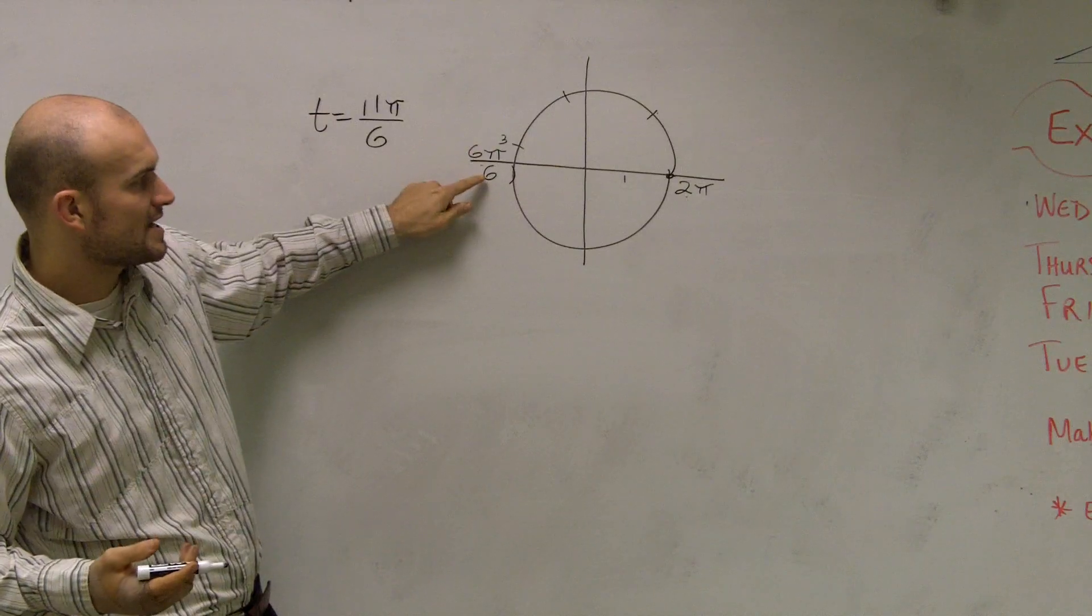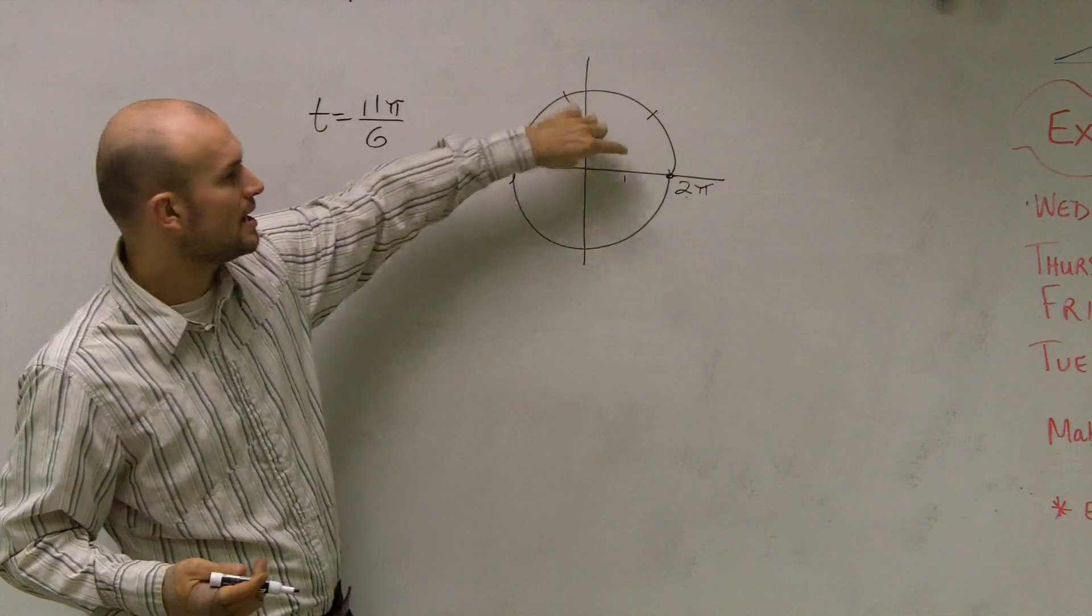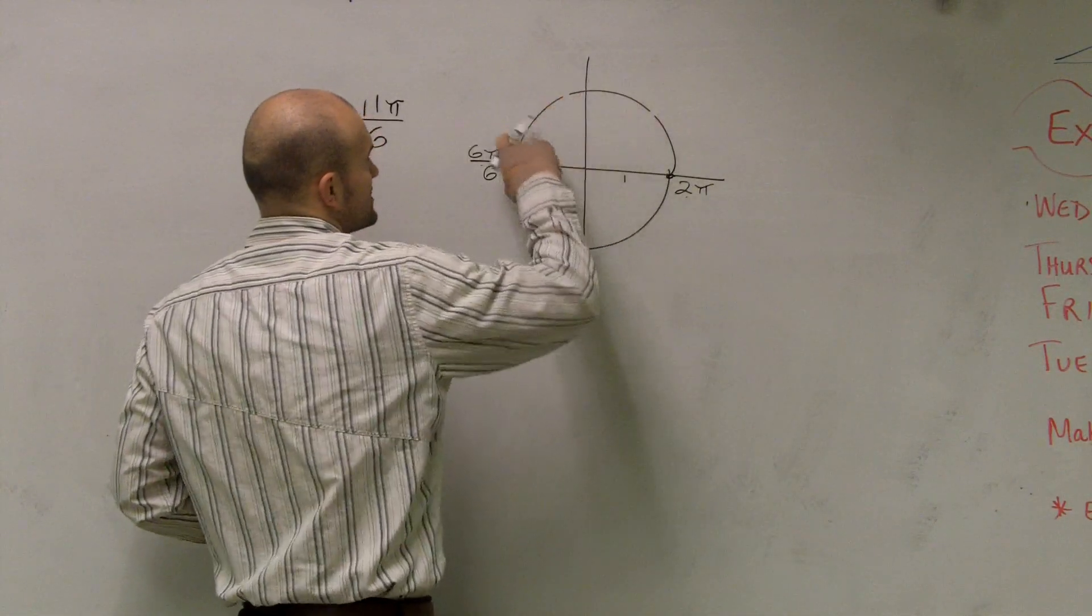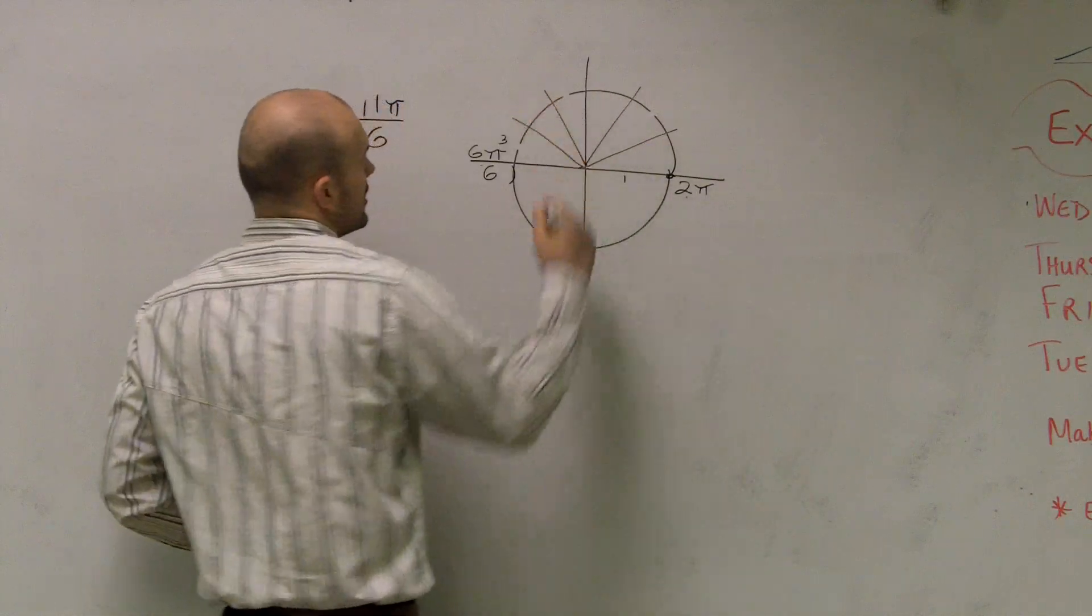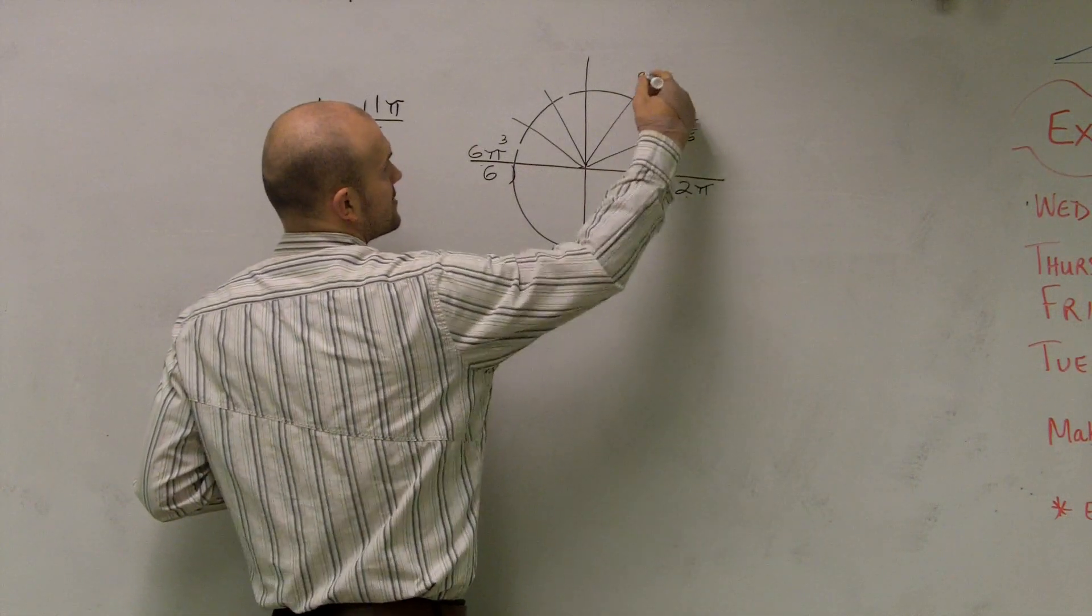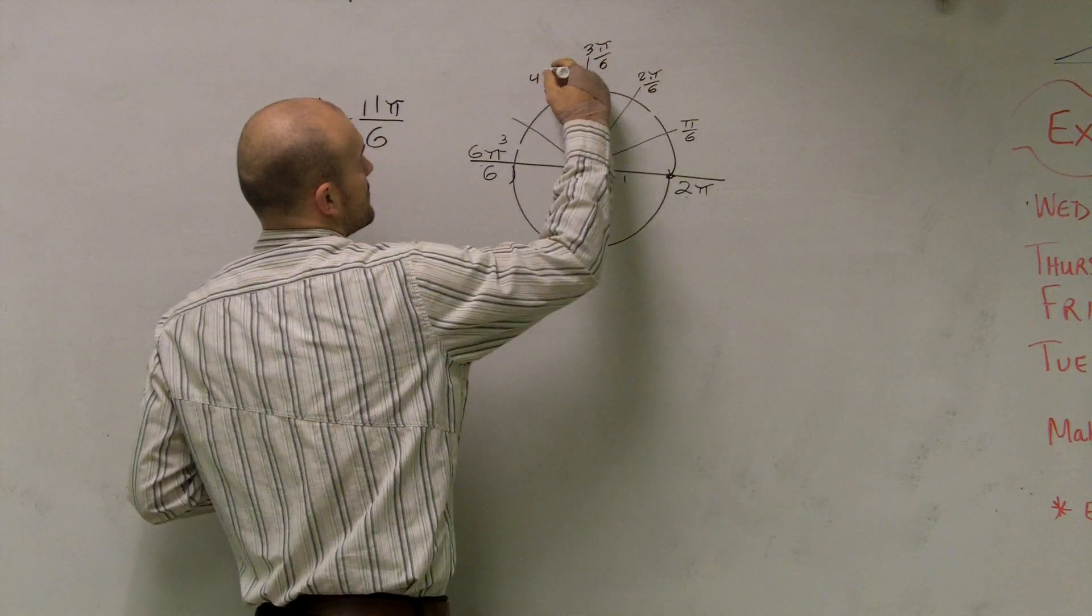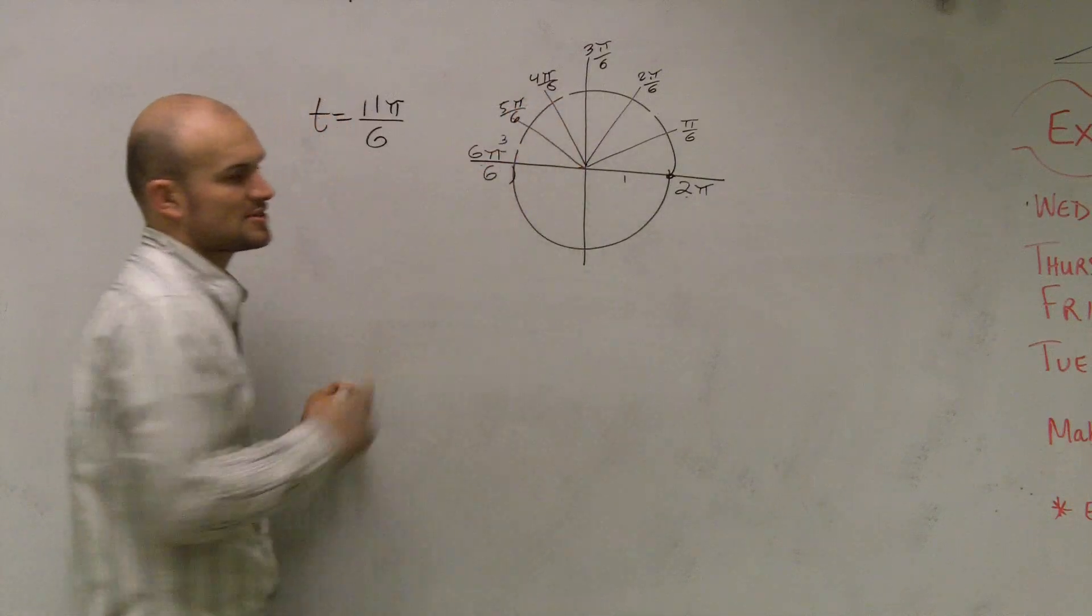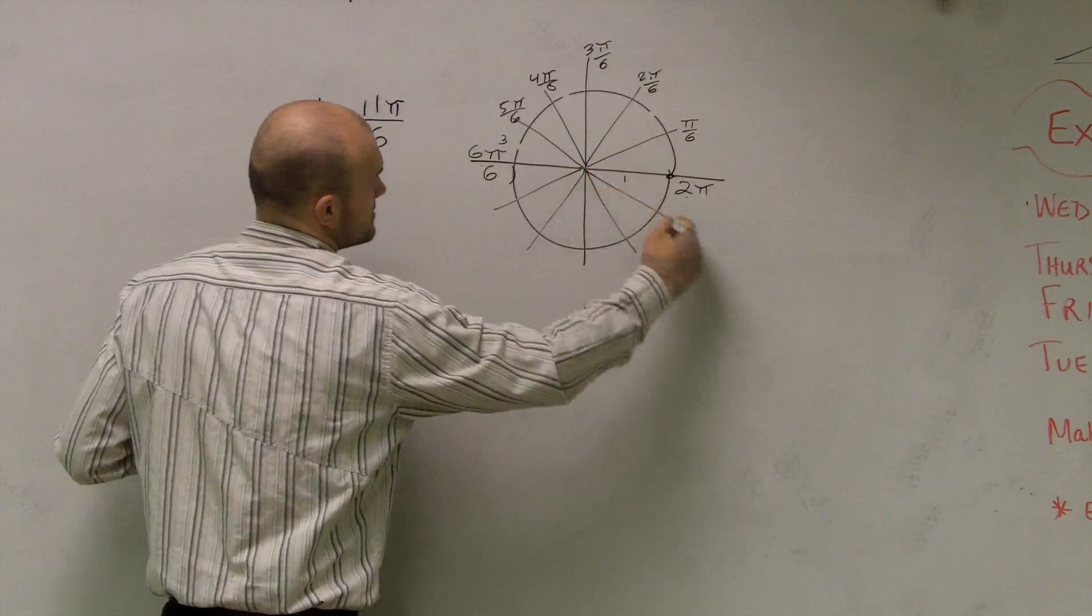So if this is 6 over 6, I'm going to separate and cut out my unit circle into 6. Let's break this up into 6. This would be π over 6, 2π over 6, 3π over 6, 4π over 6, 5π over 6, and 6π over 6.